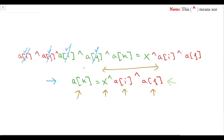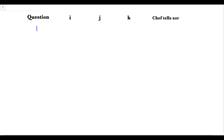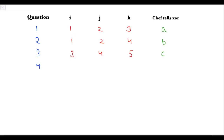Our new task is to find any two elements so we can use them to find more elements by this method. Chef A asks the first question with i=1, j=2, k=3, and Chef tells the XOR is A. The second question uses i=1, j=2, k=4, and Chef tells the XOR is B. The third question uses i=3, j=4, k=5, and Chef tells the XOR is C. The fourth question uses i=3, j=4, k=6, and Chef tells the XOR is D. At this point, indexes 3 and 4 have been used three times and cannot be used again.